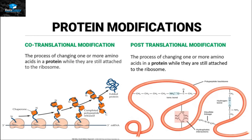In general, protein modifications can be of two different types: co-translational modification and post-translational modification. The difference between the two is that if the process of modification or changing of one or more amino acids in a protein starts while they are still attached to the ribosome, that is called co-translational modification.